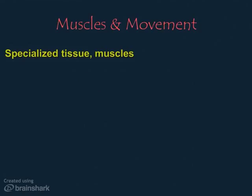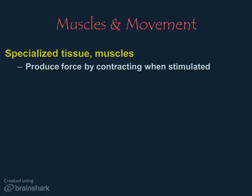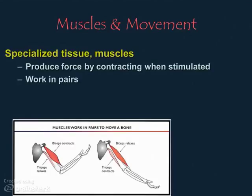Muscles are specialized tissue that produce physical force by getting shorter, or contracting, when stimulated. Muscles can relax when not being stimulated, but they cannot actively get longer — they only contract or get shorter. This presents a problem, but it's one that's solved by muscles working in pairs. Your biceps and triceps, or quadriceps and hamstrings, are examples of these pairs.